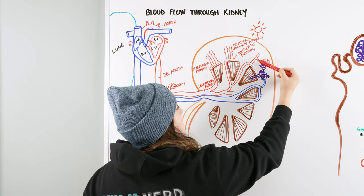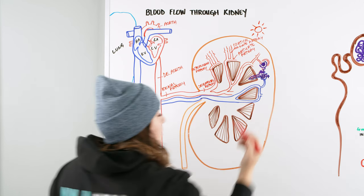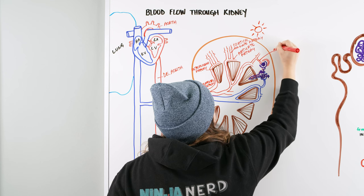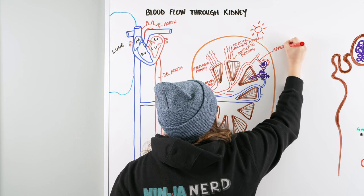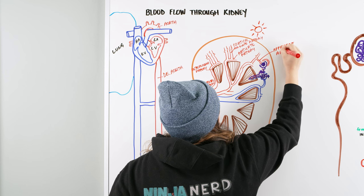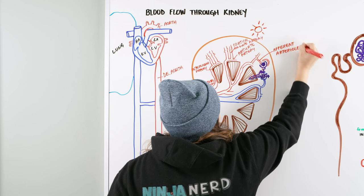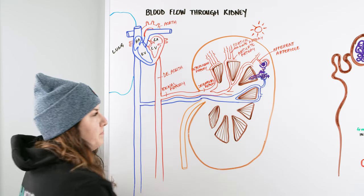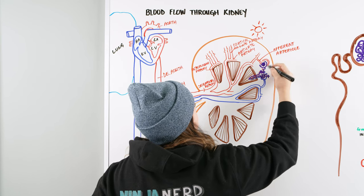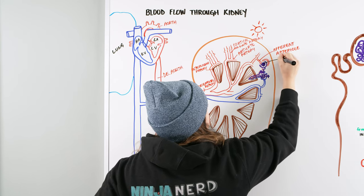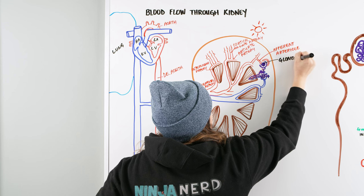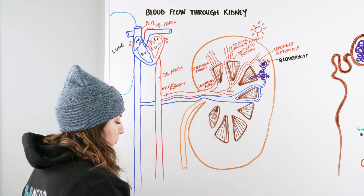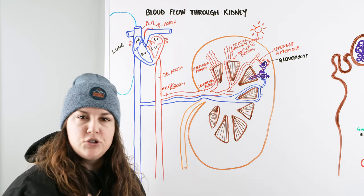From the cortical radiate arteries, they send off really small vessels — the smallest type of artery, which is an arteriole. Specifically, these are our afferent arterioles. The afferent arteriole flows into a capillary bed that looks like a ball of yarn — that is our glomerulus. There is an exchange of particles and very small substances here, but no gas exchange.